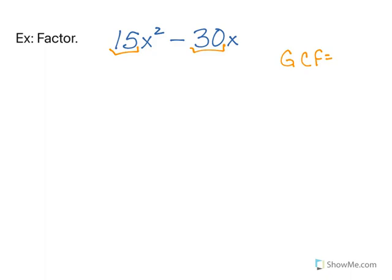So when I look at 15 and 30, the largest number that divides evenly into both of these is 15. Then I look at x squared and x. When I'm finding the GCF of a variable, it's the variable, same base, it's the smaller exponent. So I just have x. So my greatest common factor is 15x.